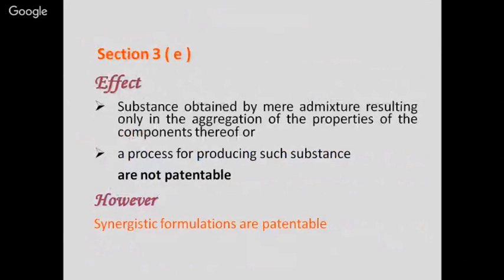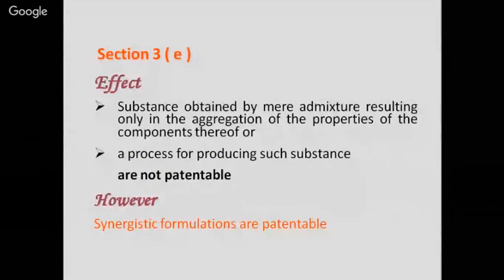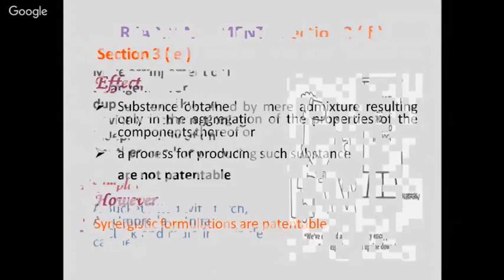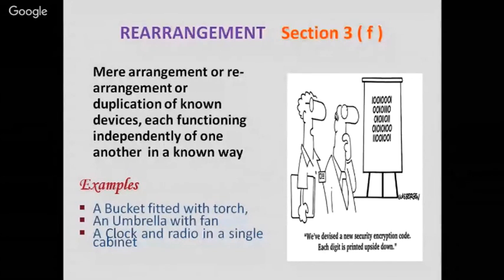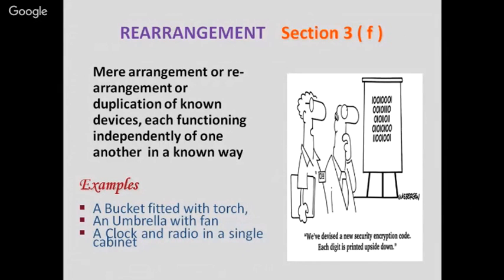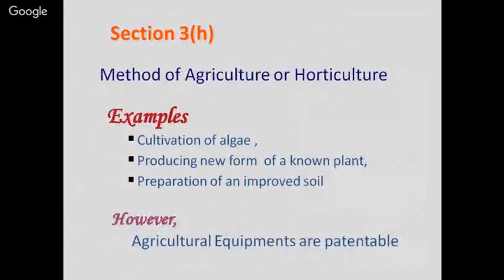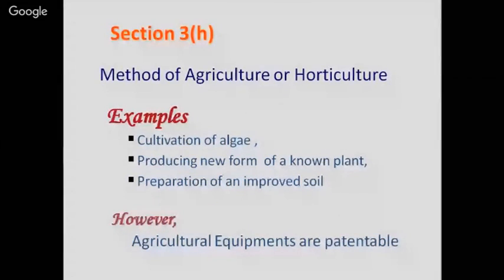Mere rearrangement or duplication of known devices, each functioning independently in a known way, is also not patentable. Examples include a bucket fitted with a torch, an umbrella fitted with a fan, or a clock and radio in a single cabinet. Methods of agriculture or horticulture — for example, cultivation of algae — are also not patentable, though new and novel agricultural equipment can be patented.